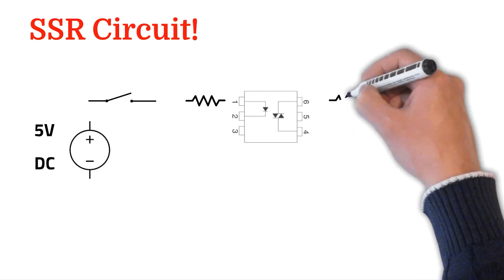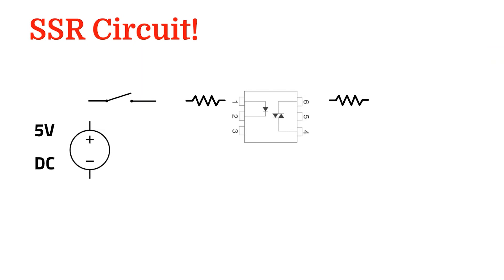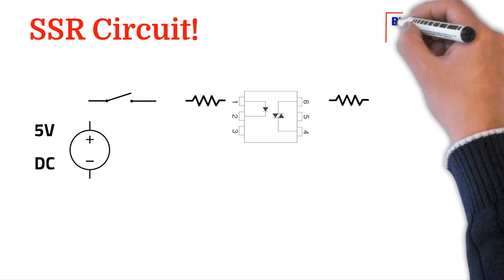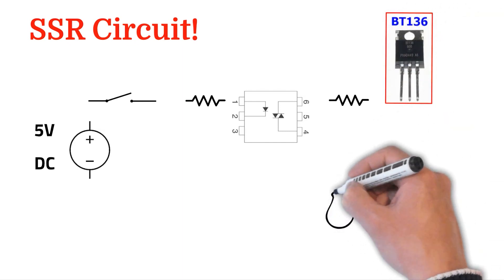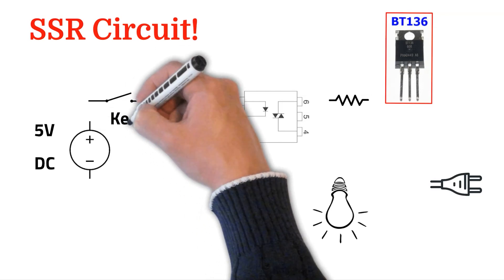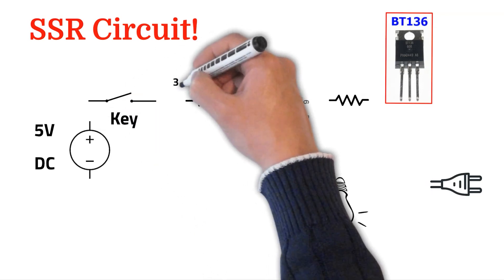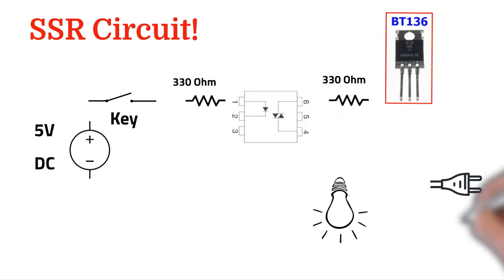And another resistor for current limitation again. We need one triac that we choose BT136, one bulb, and one AC voltage. And the amount of each resistor is 330 ohms.